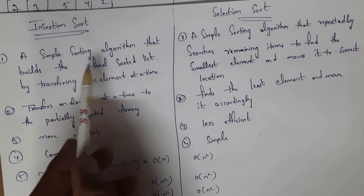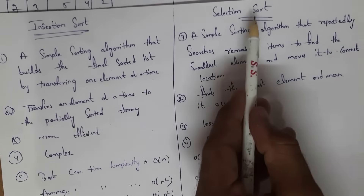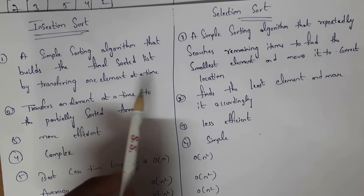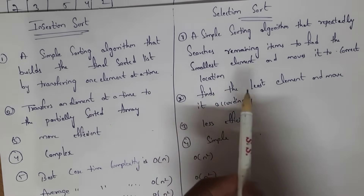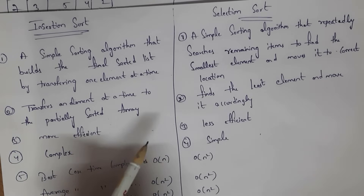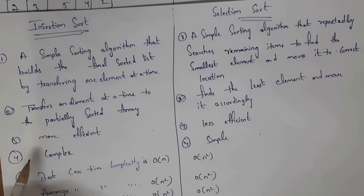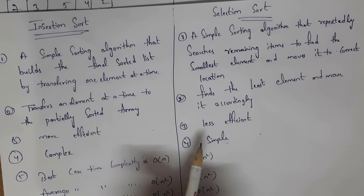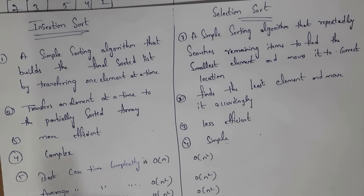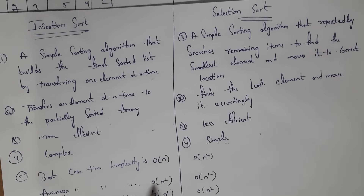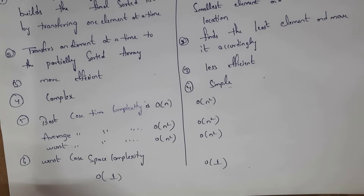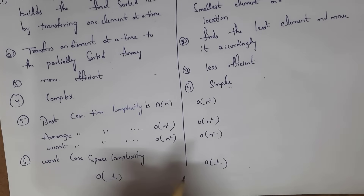Now the differences between insertion sort and selection sort. Insertion sort builds the final sorted list by transferring one element at a time. Selection sort repeatedly searches remaining items to find the smallest element and moves it to the correct location. Insertion sort is more efficient than selection sort, while selection sort is less efficient. Insertion sort is more complex than selection sort, which is simpler. Best case time complexity of insertion sort is O(n); average and worst case is O(n²). For selection sort, best, average, and worst case time complexity is O(n²). Worst case space complexity for both insertion sort and selection sort is O(1).